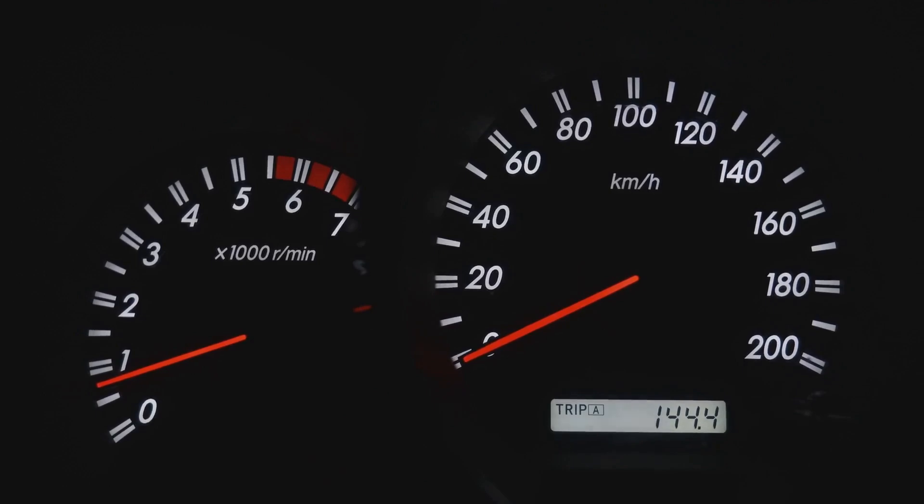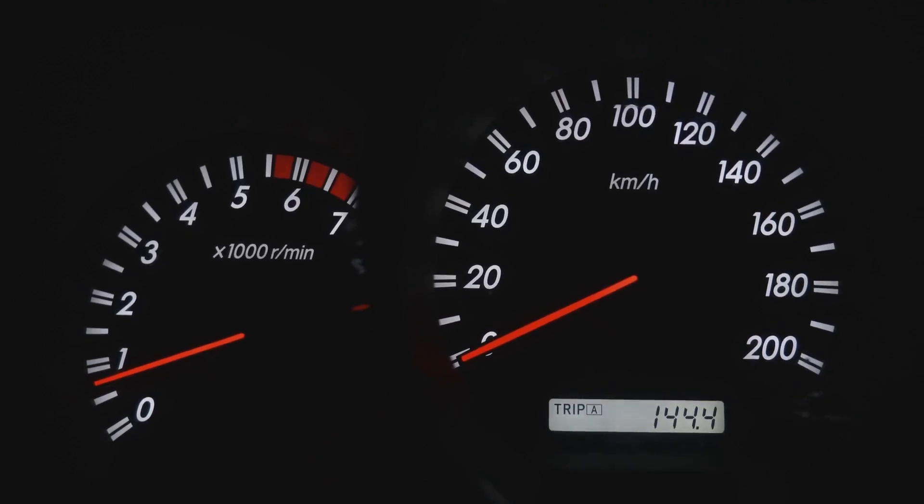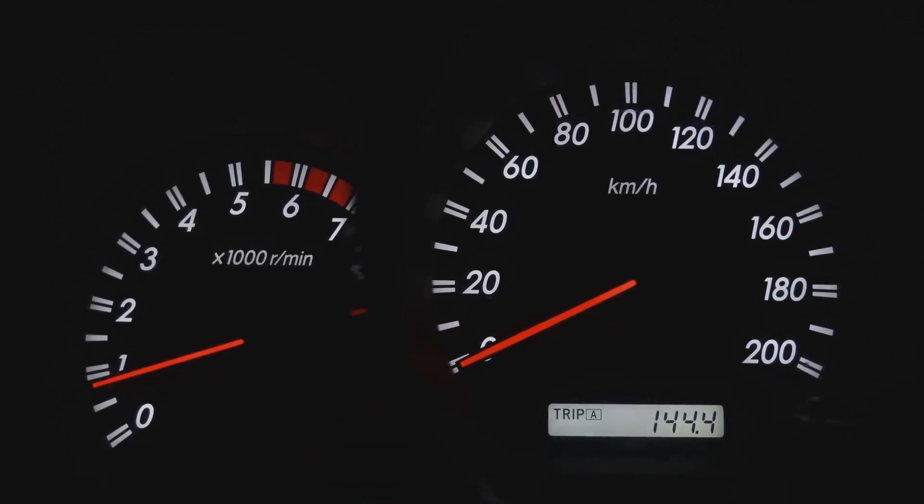So, in just one second, light can travel almost 300,000 kilometers. But how far is that exactly? Well, stay tuned as we delve deeper into the mind-boggling distances that light can cover in just a blink of an eye.